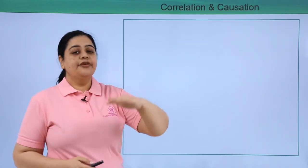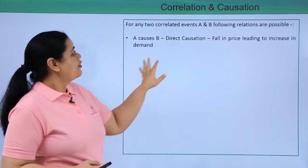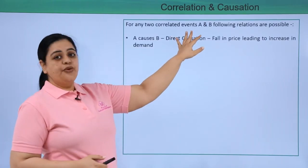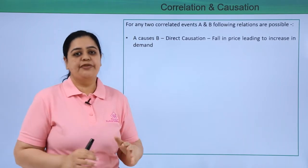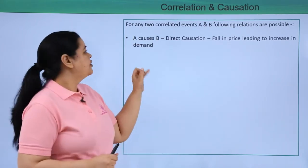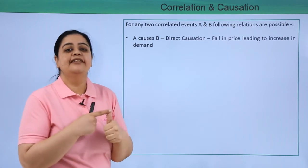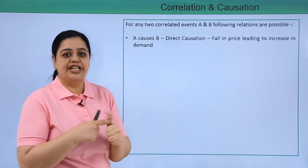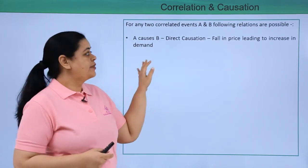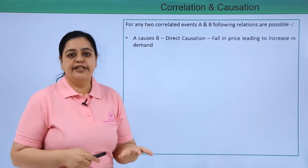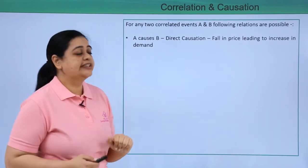Now let us understand correlation and causation. For any two correlated events such as A and B, there are different relations which are possible. The first is A causes B — that is direct causation. For example, fall in the price leading to increase in demand is the most common example of direct causation.